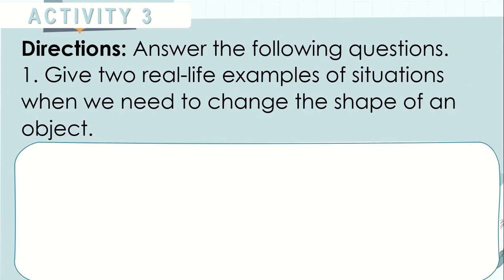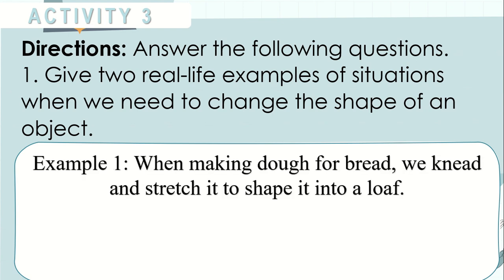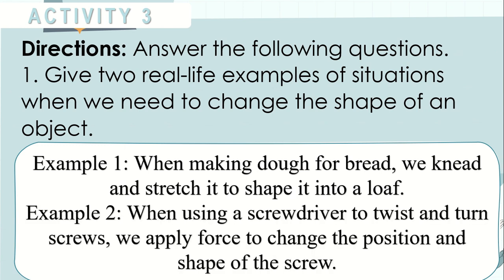Answer the following questions. Give two real life examples of situations when we need to change the shape of an object. Example number one: When making a dough for bread, we knead and stretch it to shape it into a loaf. Example two: When using a screwdriver to twist and turn screws, we apply force to change the position and shape of the screw.